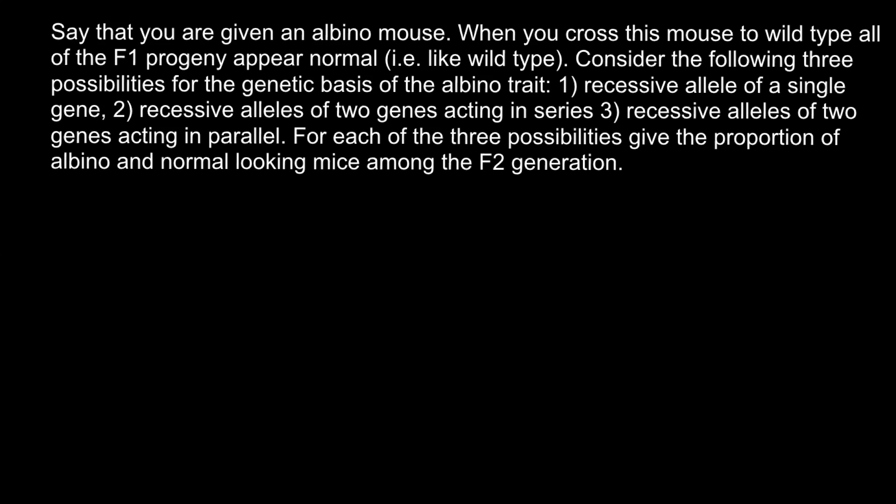Hello and welcome to Nikolai's genetics lessons. Today's problem: you are given an albino mouse. When you cross this mouse to a wild type, all of the F1 progeny appear normal. Consider three possibilities for the genetic basis of the albino trait: first, recessive allele of a single gene; second, recessive alleles of two genes acting in series; third, recessive alleles of two genes acting in parallel. For each possibility, give the proportion of albino and normal-looking mice among the F2 generation. I recommend you pause the video, try to solve this problem on your own, then compare your answer with my explanation.